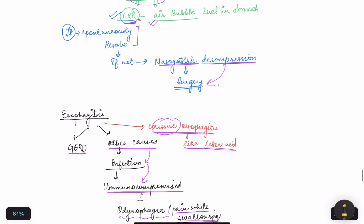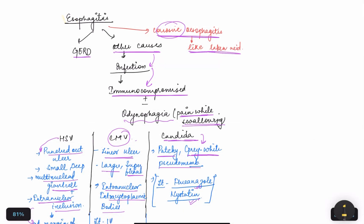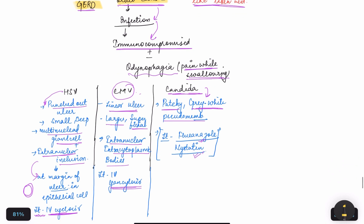The treatment will be spontaneous resolution. If not, we will provide nasogastric decompression and then surgery. Now we have esophagitis. Esophagitis can be caused by GERD, corrosive esophagitis, and other causes. Other causes can be infections like in an immunocompromised patient which have odynophagia.